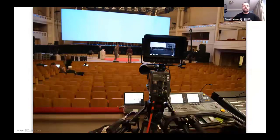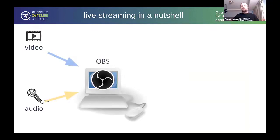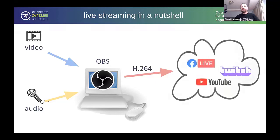I happened to volunteer at one of the non-profits to help them with their live streaming setup. Live streaming is pretty simple: you have your video and audio signals, maybe from the same device or separate. Many people run a computer with broadcasting software like OBS, which processes the signals, applies effects, and generates a stream in a format like H.264. That digital stream gets pushed to cloud streaming services like YouTube, and end users connect and watch.